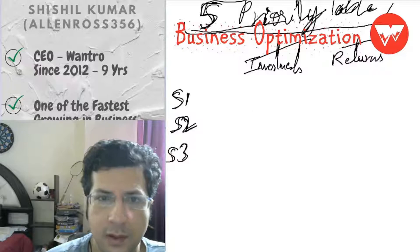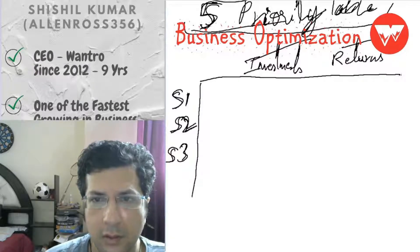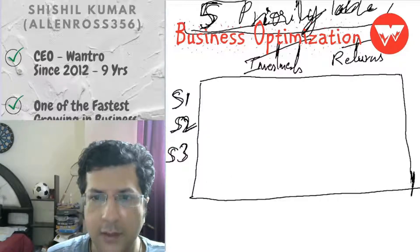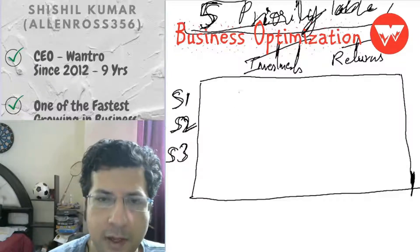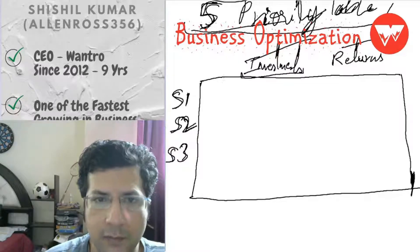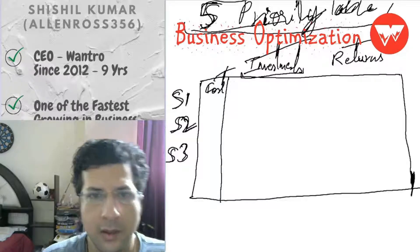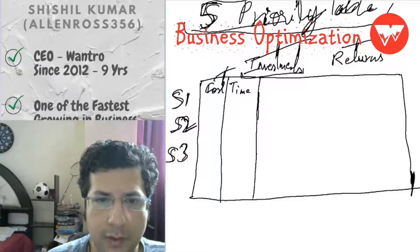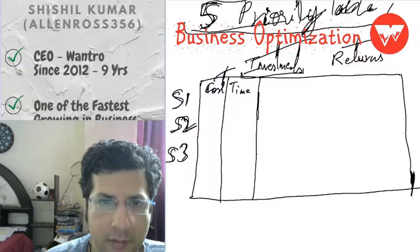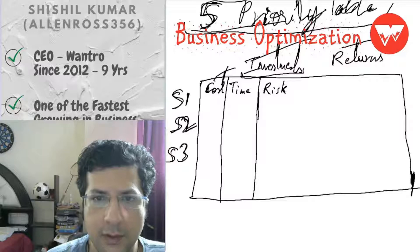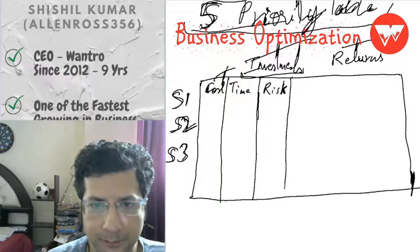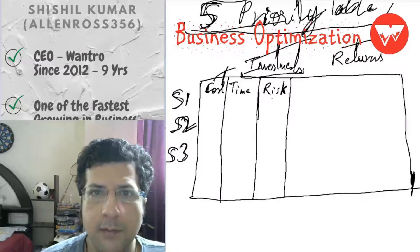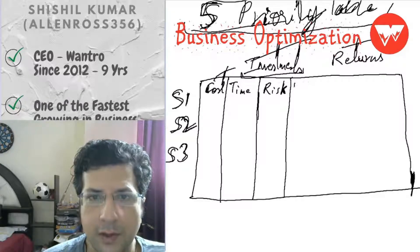There can be multiple types of investments into the task or strategy, and multiple types of returns. What are the types of investments? Investments can be: how much money or cost it's going to take — that's one investment. Another investment is how much time it's going to take. And then another type of investment is what the risks are.